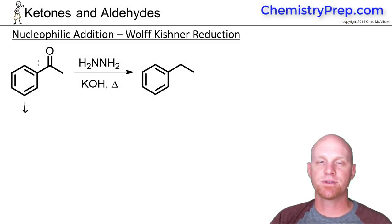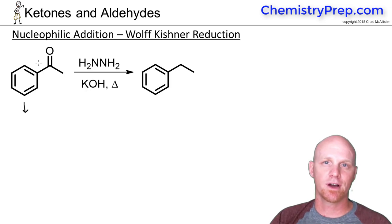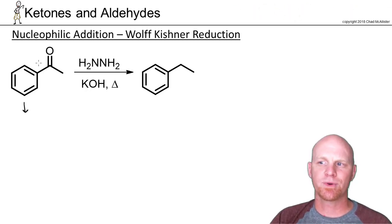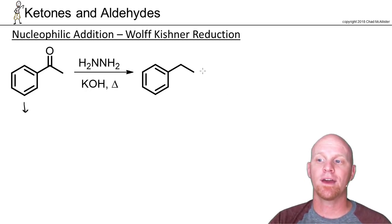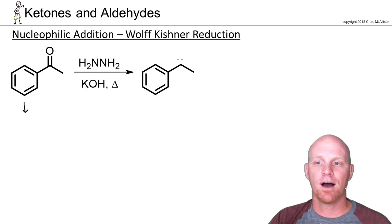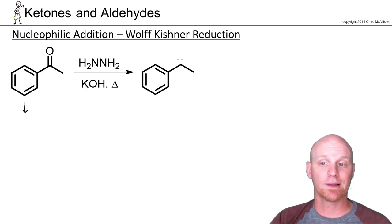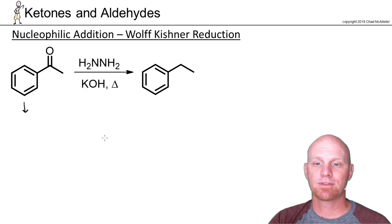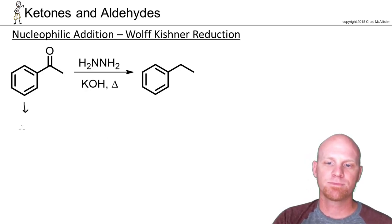Since we're going over the addition of nitrogen nucleophiles here, we want to revisit the Wolf-Kishner reduction. Back when we talked about the Wolf-Kishner reduction in the aromatic compounds chapter, we showed that it was a reduction for ketones and aldehydes to an alkane — a full reduction of the carbonyl carbon. We said we would learn the mechanism later, and well, it's now later. The first part of the mechanism is related to what we just covered, and that's why we waited till now to talk about it.